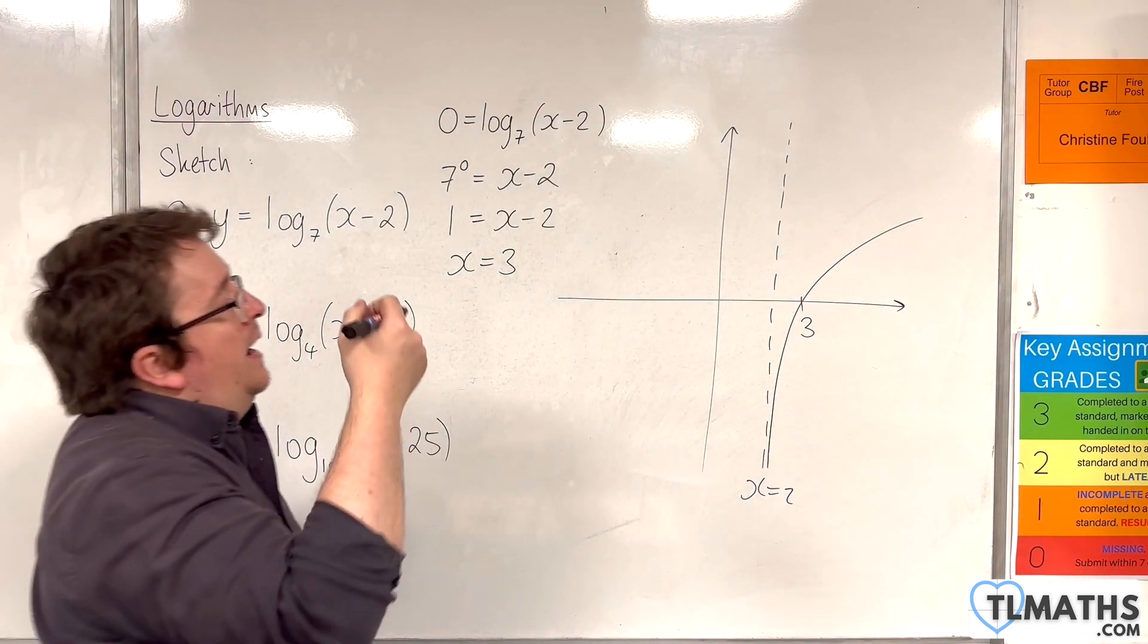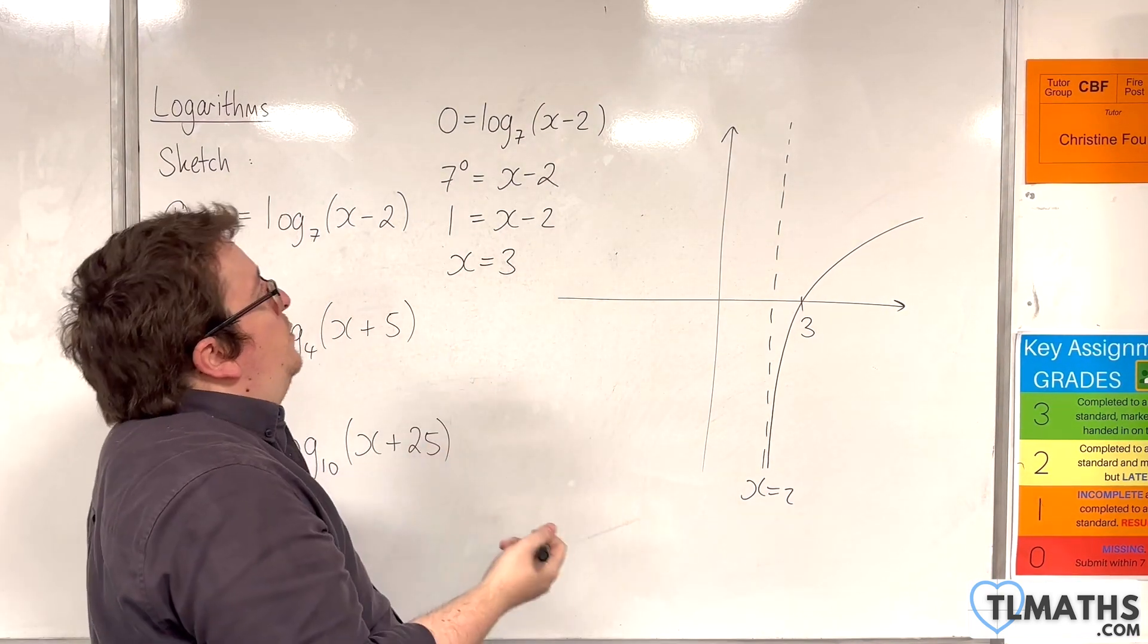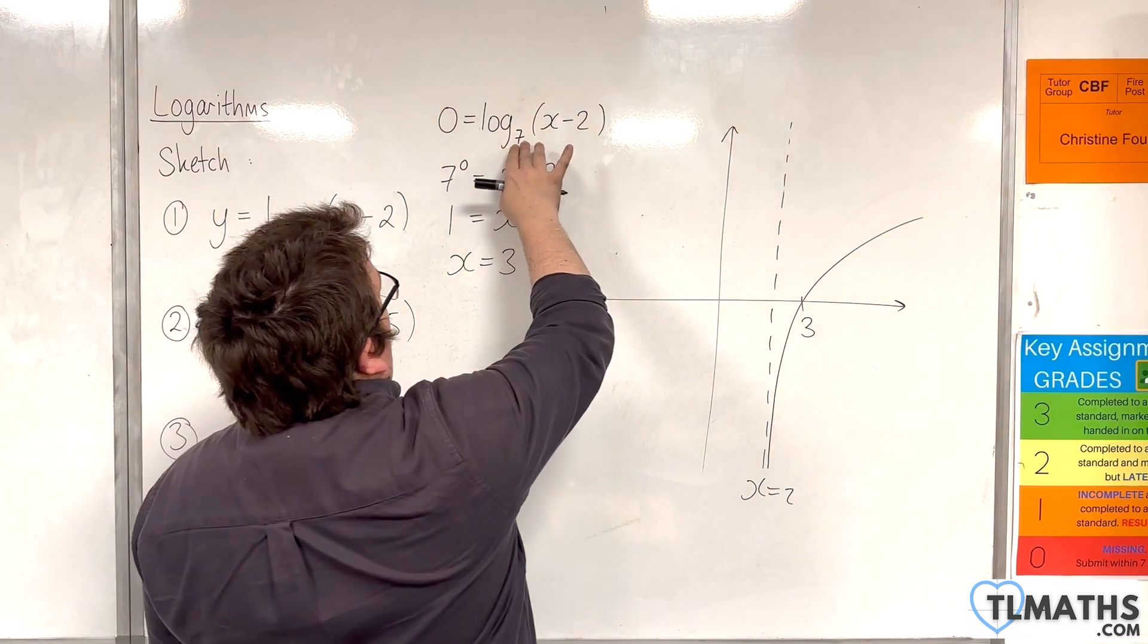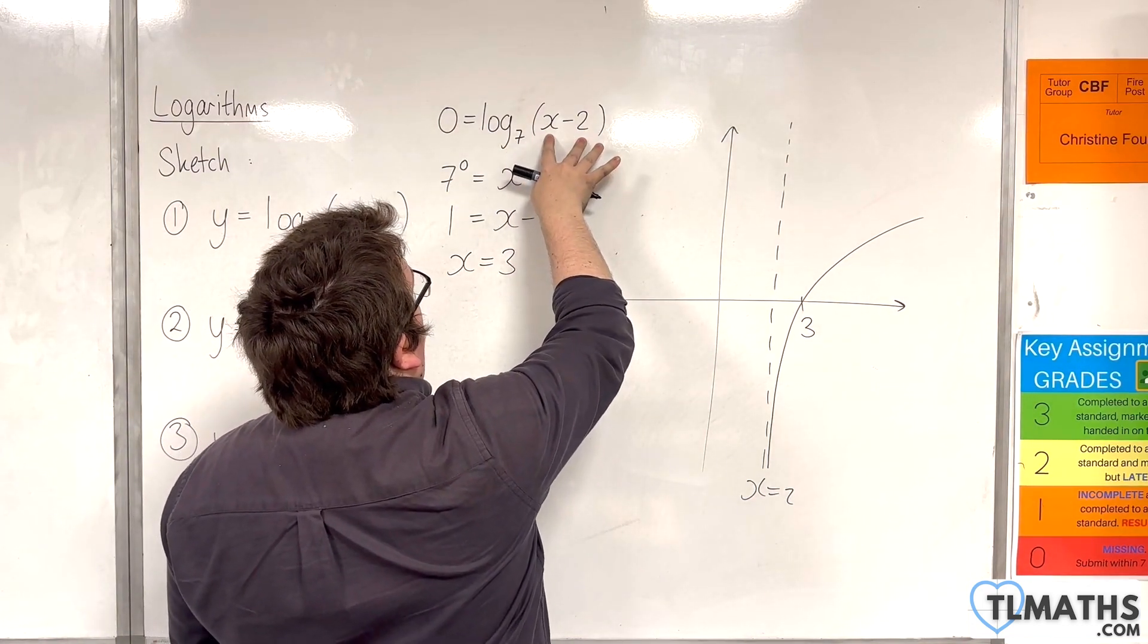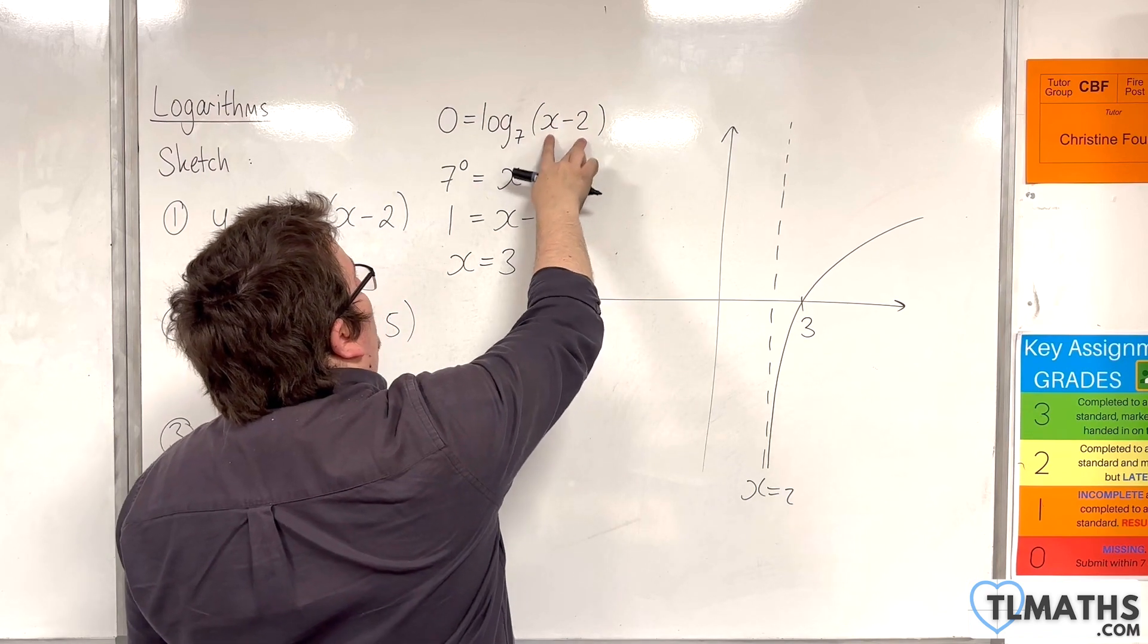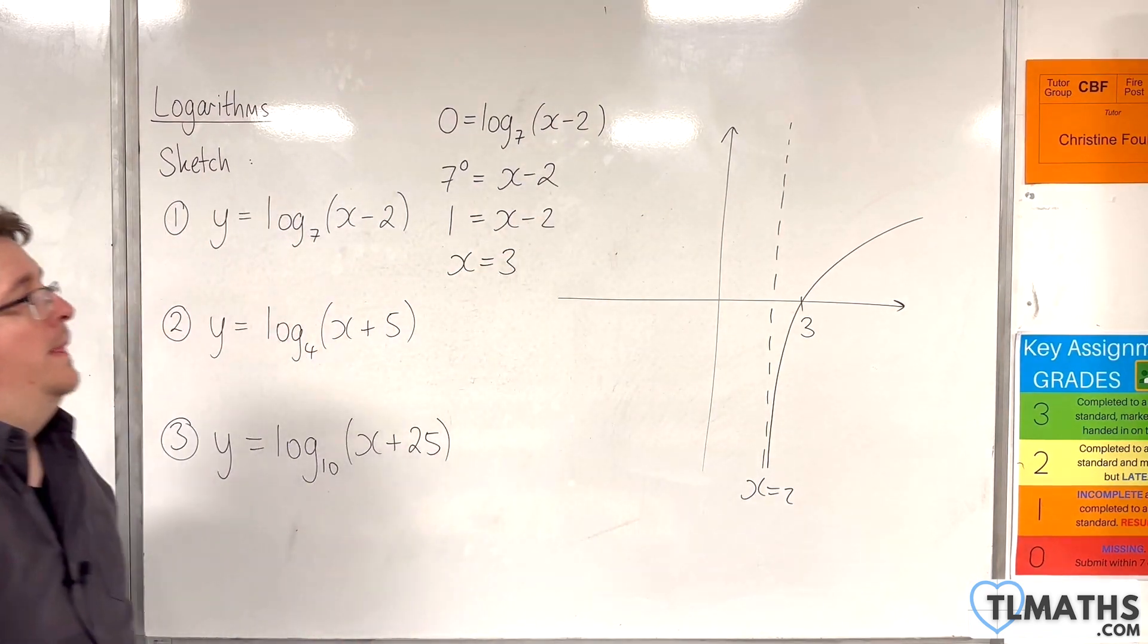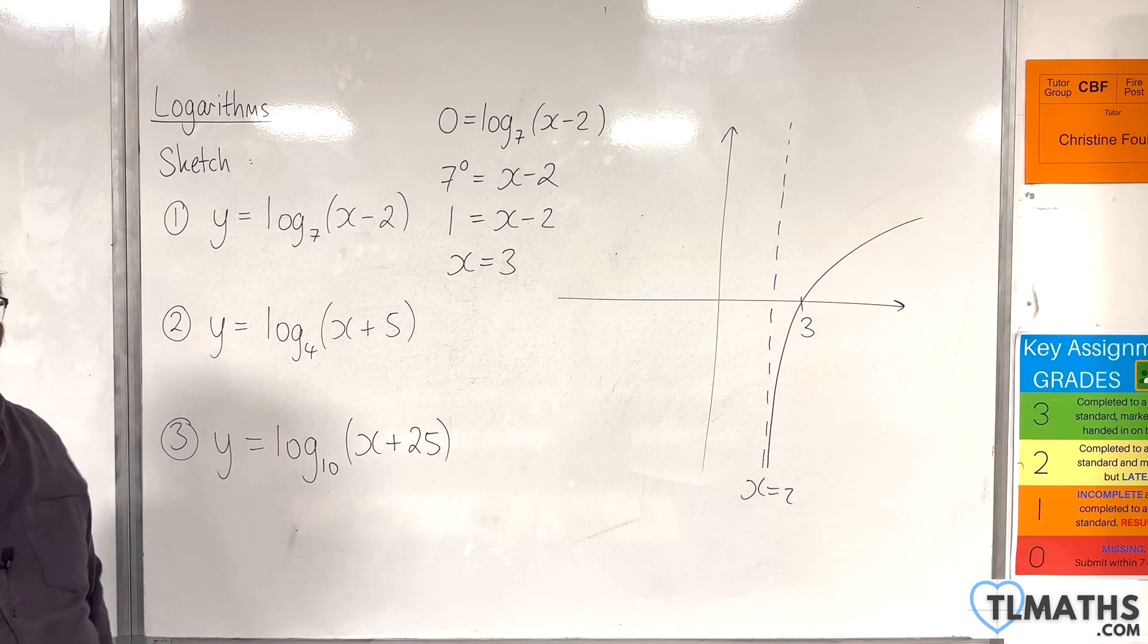So if you are more confident with logarithmic, you should know that log base 7 of 1 must be equal to 0. So the x take away 2 has to be 1 here. And then that means that x has to be 3.